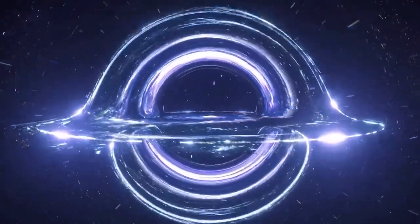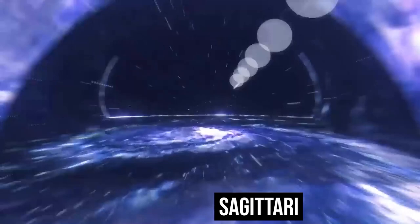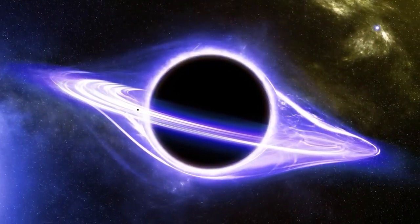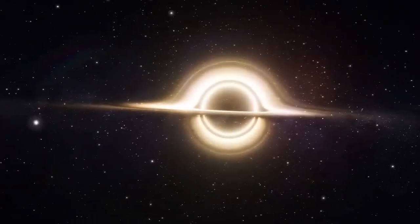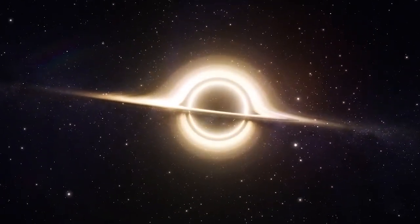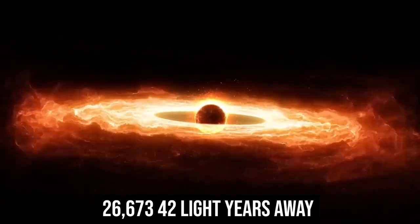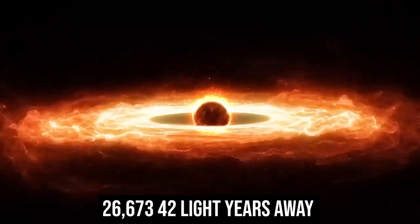The supermassive black hole at the center of our galaxy is known as Sagittarius A-star. In the direction of Sagittarius Constellation, close to the Scorpius-Sagittarius boundary, the Milky Way's central black hole is located 26,673.42 light-years away from Earth.